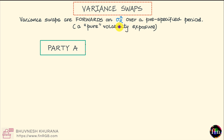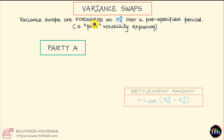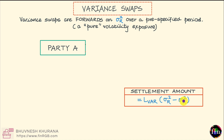From the perspective of the party which has bought a variance swap — that party which has taken a long position — the payoff would look something like this. It will simply be equal to the contract notional, also called the number of variance units, times the difference between realized variance and strike variance. Both of these inputs are annualized numbers.